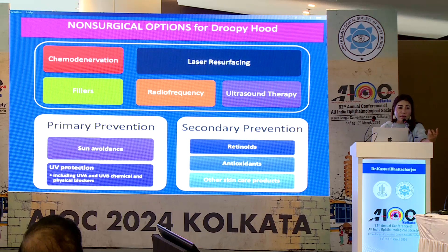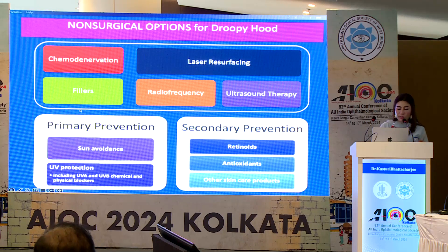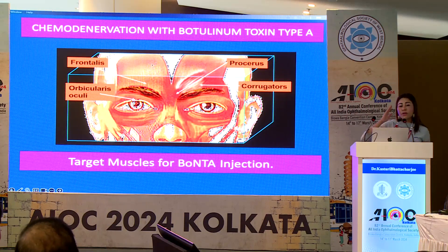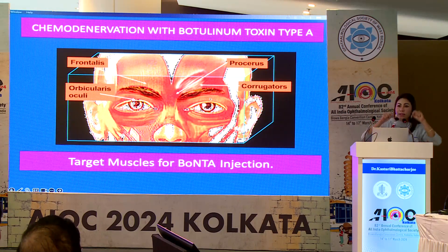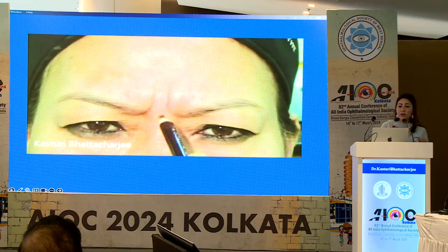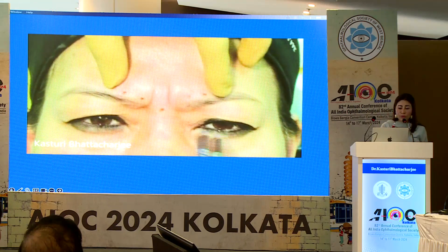Treatment can be non-surgical or surgical. Non-surgical options include botulinum toxin type A injections, lasers, radiofrequency, high-intensity focused ultrasound, and dermal fillers. The only elevator of the eyebrow is the frontalis, while the orbicularis, procerus, and corrugator are the muscles that pull the eyebrow down. When you perform chemodenervation, you must target those muscles — especially the central group — because they are responsible for pulling the eyebrow down.